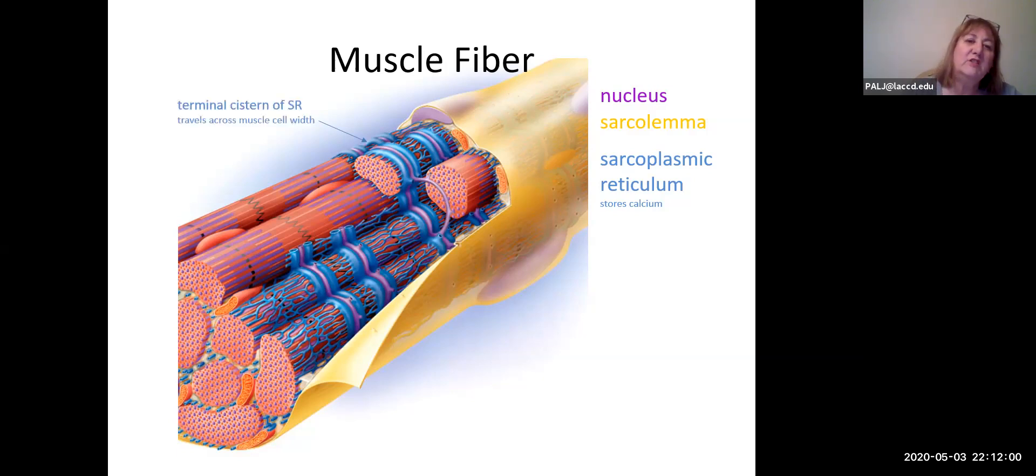I want you to look at the way the sarcoplasmic reticulum is arranged. What you'll notice is periodically we have these areas that are traveling across the muscle cell width, and these are the ends of the sarcoplasmic reticulum. These are called terminal cisterns. These terminal cisterns are big and are going to have a lot of stored calcium. Between two adjacent terminal cisterns there is a lilac colored structure which we'll get to in a second.